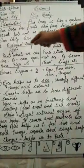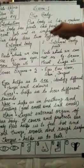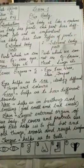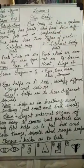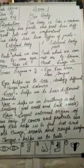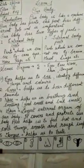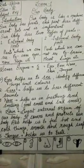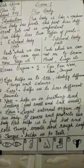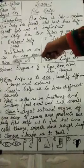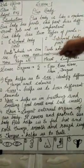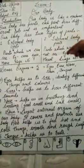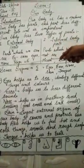External body parts — as the name suggests — 'external' matlab bahar, aur 'internal' matlab andar. External body parts aise body parts hain — the parts which we can see — jisko hum bahar se dekh sakte hain. Humare aise body parts jinhe hum bahar se easily dekh sakte hain. For example: ears, eyes, nose, legs, et cetera. Yeh saari body parts hum bahar se dekh sakte hain.